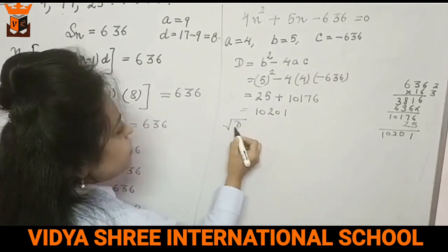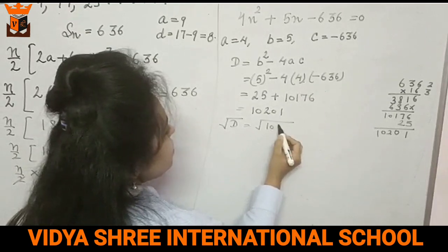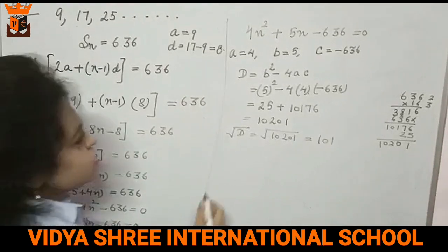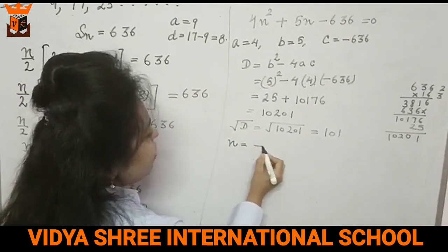We will find its square root. Root of 10,201. What is the square root? 101, right?